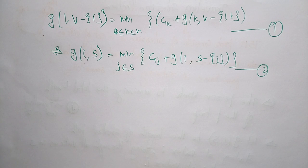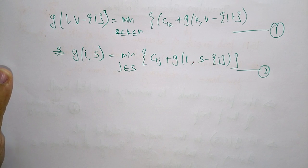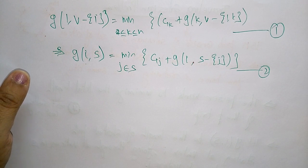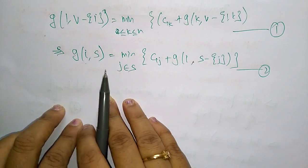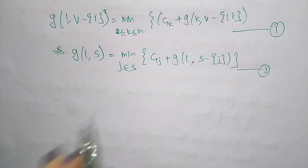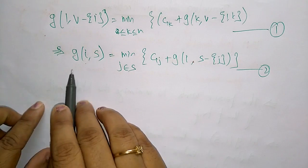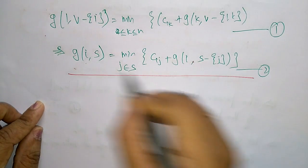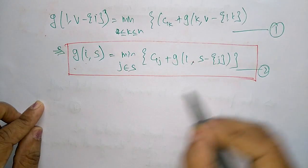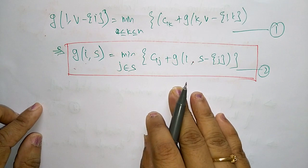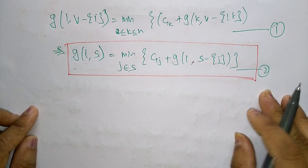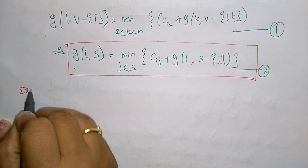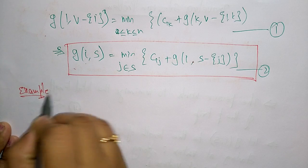Hi students, welcome back. Let us continue with the topic Traveling Salesperson Problem, this time using the dynamic programming approach. In the previous video, I explained the generalization of how we travel from one city to another. This equation is what we have to find out — the shortest path finding the minimum cost tour for the traveling salesman.